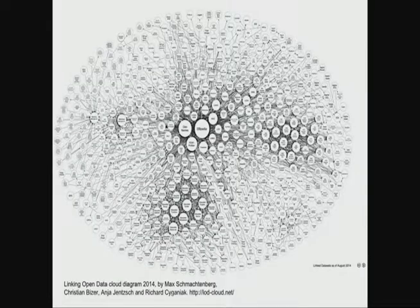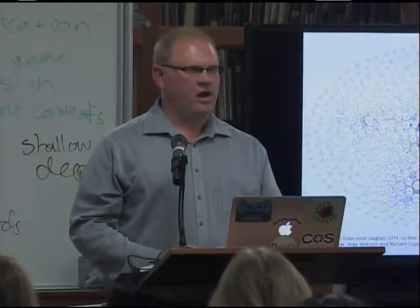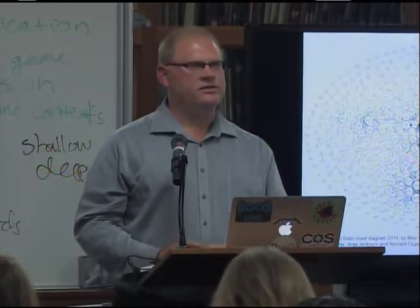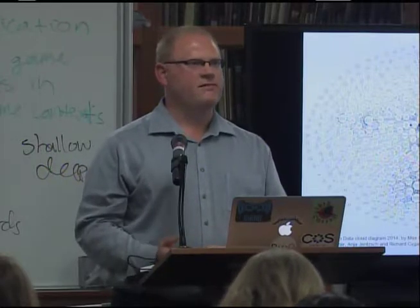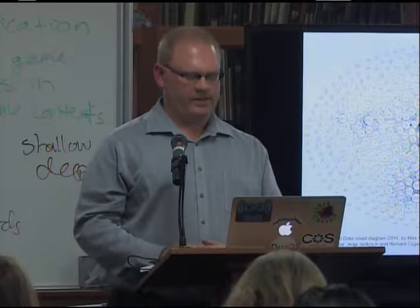If we take that to the next level with tons of data, the web can get huge. This image shows around 400 different datasets and how they're all linked together — all made available as linked data. Some are relatively small with thousands of triples. Some are huge, like DBpedia, which is the linked data markup of Wikipedia with trillions, if not more, triples that are all linked together.